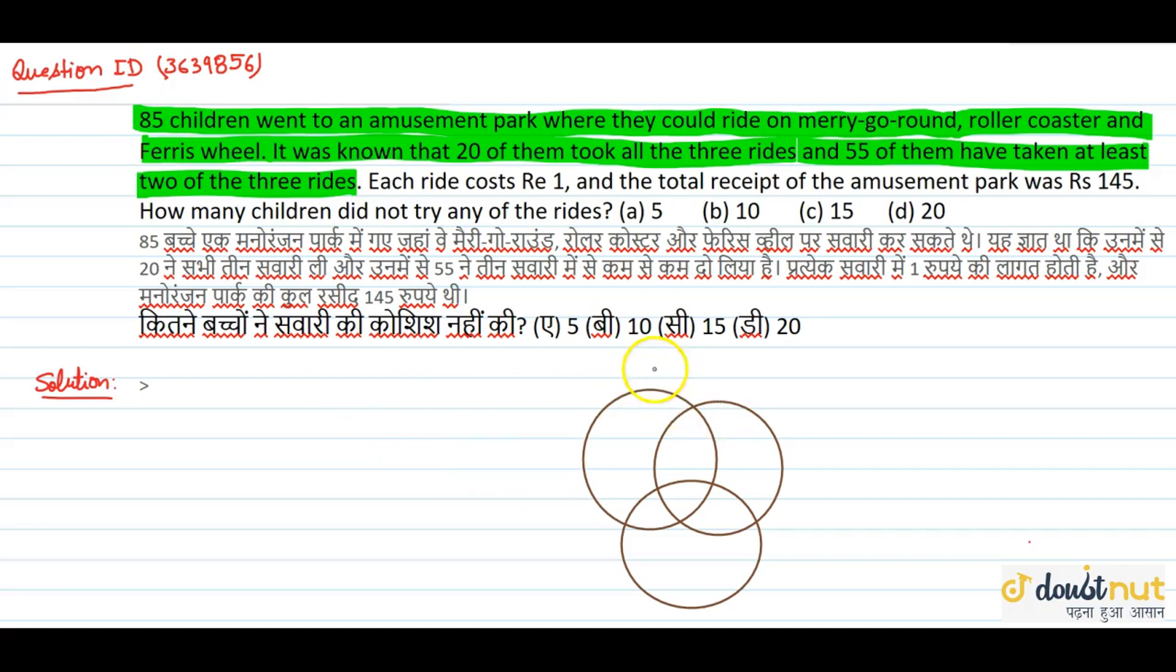First of all, we can draw 3 circles for the 3 rides. So we have merry-go-round, second we have roller coaster, and third we have ferris wheel.